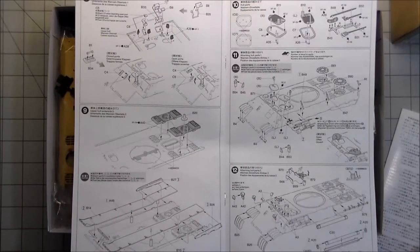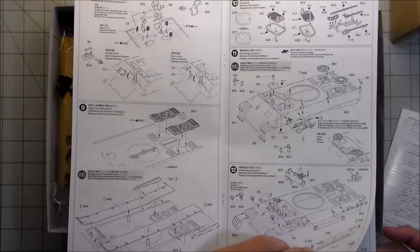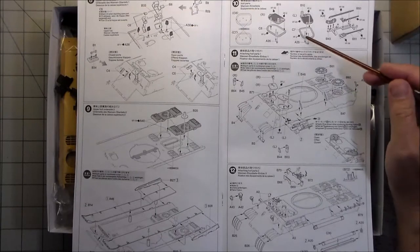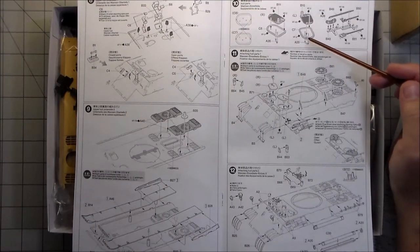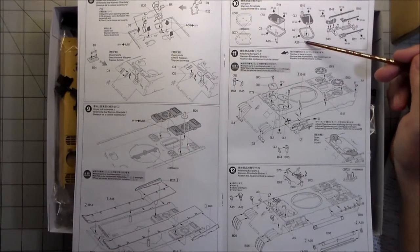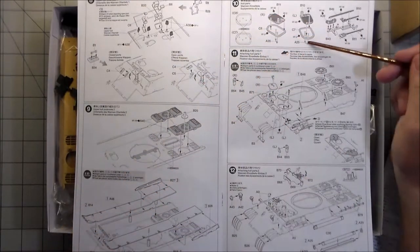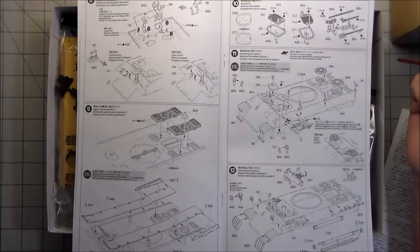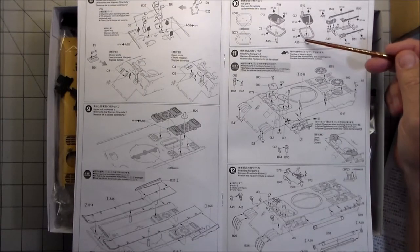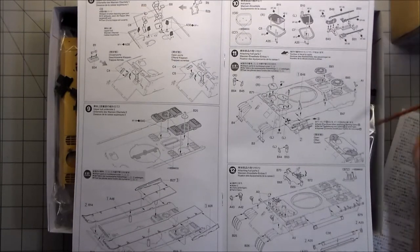One thing I want to bring up - I brought this up in my recent Sherman build. It's a new tool kit as well. Why can't Tamiya always do this? You have separate grab handles for the hatches instead of just molding the wedge on there. They obviously have the technology because they're doing it on this one. It's not that hard to shave the incorrect things off and make wire handles, but why not just do this on all of them?